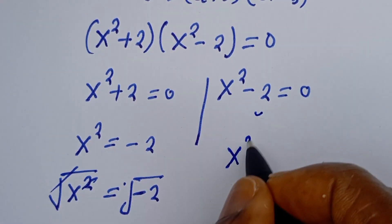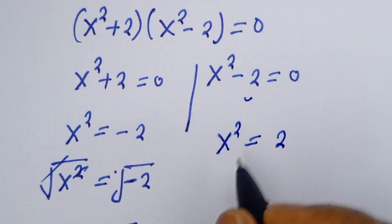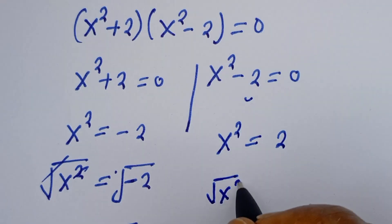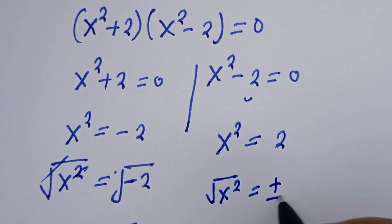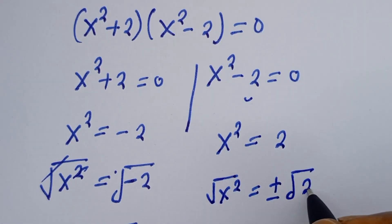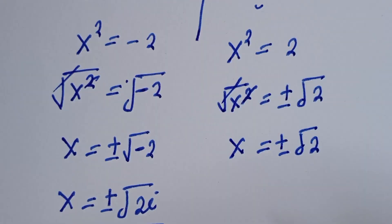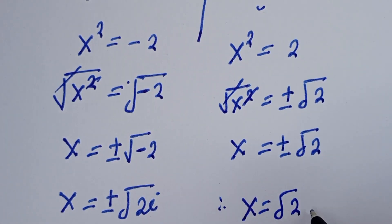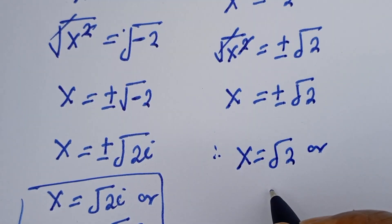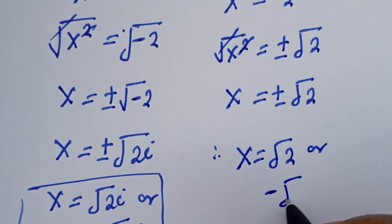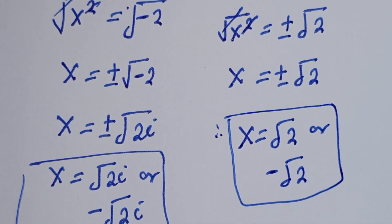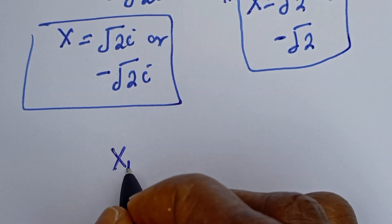From the second case, s squared is equal to 2. Let's take the square root of both sides. The square root of s squared is equal to plus or minus the square root of 2. This cancels, so s is equal to plus or minus the square root of 2, giving us square root of 2 or minus square root of 2.